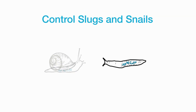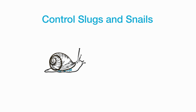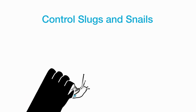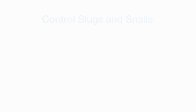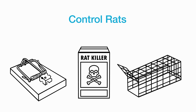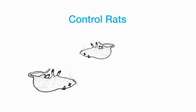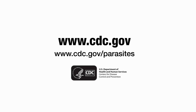Control slugs and snails — use gloves to remove them from around your home. Control rats — use bait and traps to catch rats, remove dead rats, and keep your property clean to keep rats away. To learn more about rat lungworm disease, visit CDC.gov.